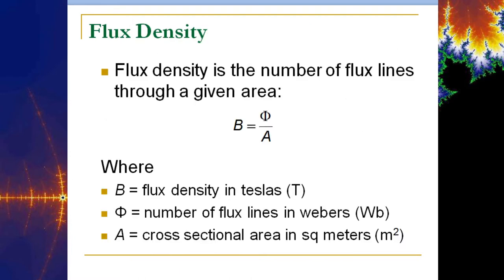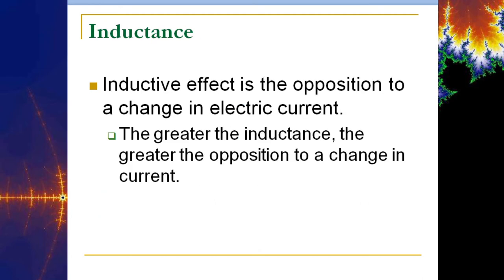What this coiled wire is doing is storing energy as magnetic flux. Whereas a capacitor stores energy in an electric field, an inductor stores energy in an electromagnetic field — and it's different in how it discharges as well. The flux density is the number of lines of flux through a given area. The inductive effect is the opposition to a change in electric current — the greater the inductance, the greater the opposition to a change in current.